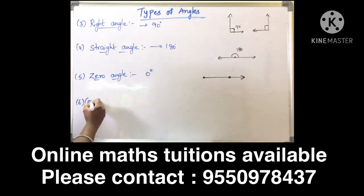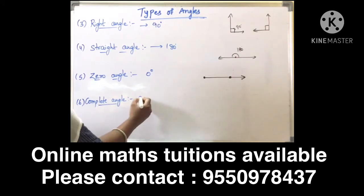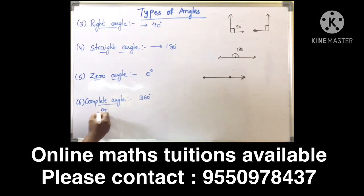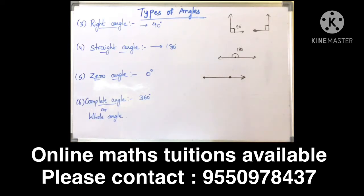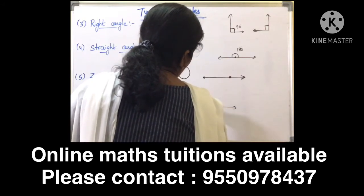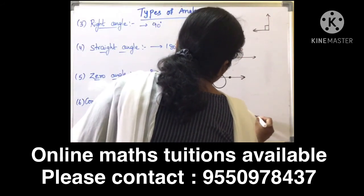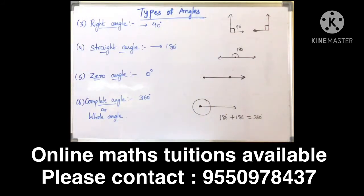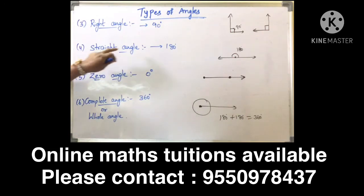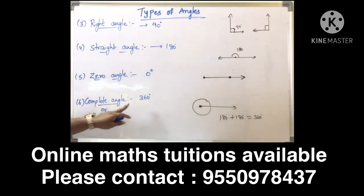Next is complete angle, also called whole angle. An angle whose measure is 360 degrees is called a complete angle. This is because 180 degrees up plus 180 degrees down gives a total of 360 degrees.